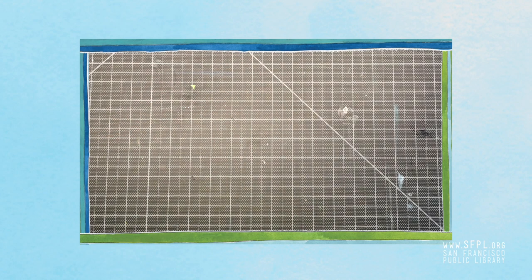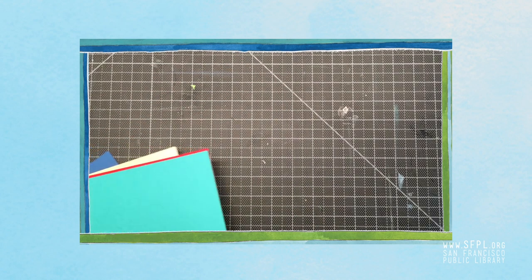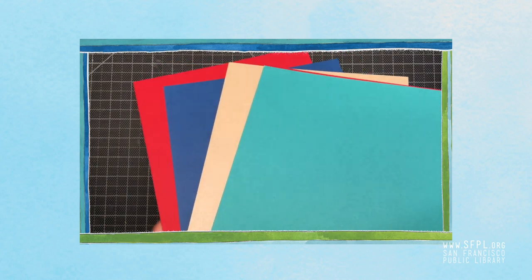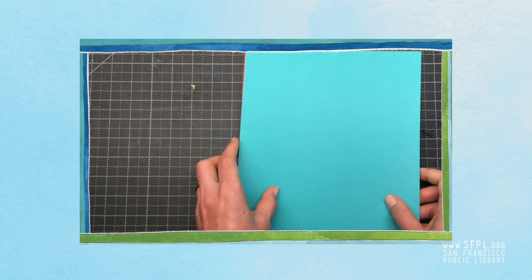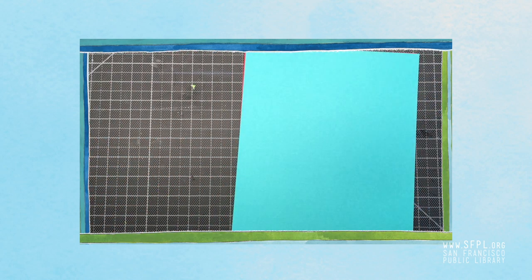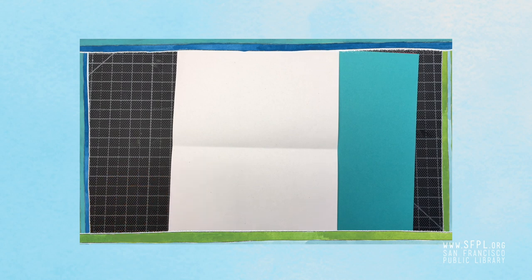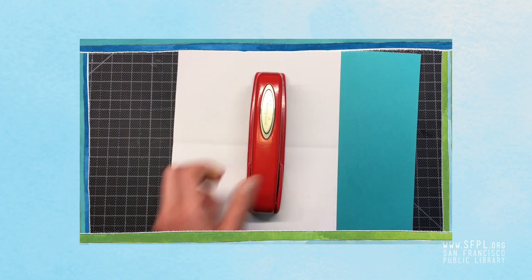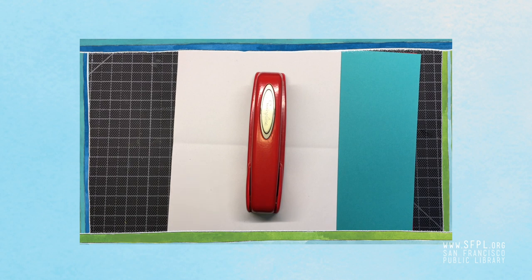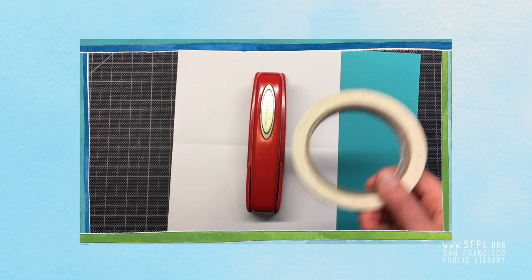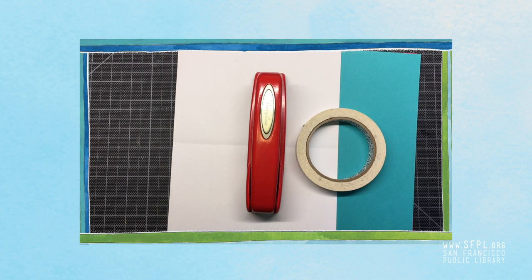It's nice to have a cardstock or a thicker piece of paper for your cover, any color you want. You can put a pocket. And then some computer paper or sketchbook paper, a stapler, tape for making a pocket, and a glue stick.